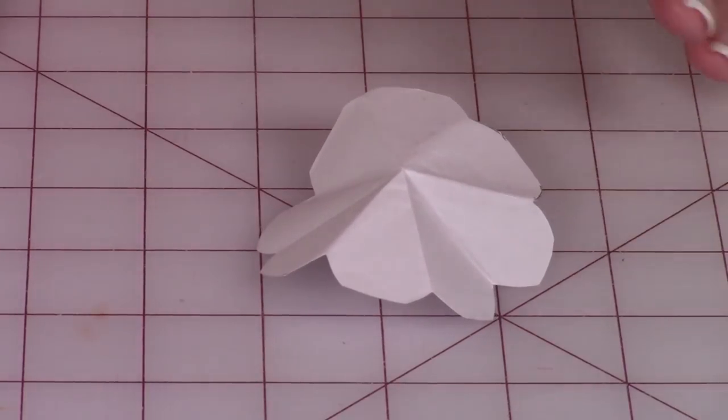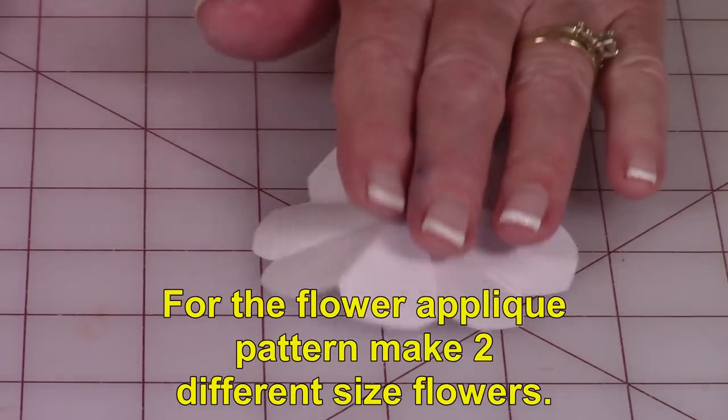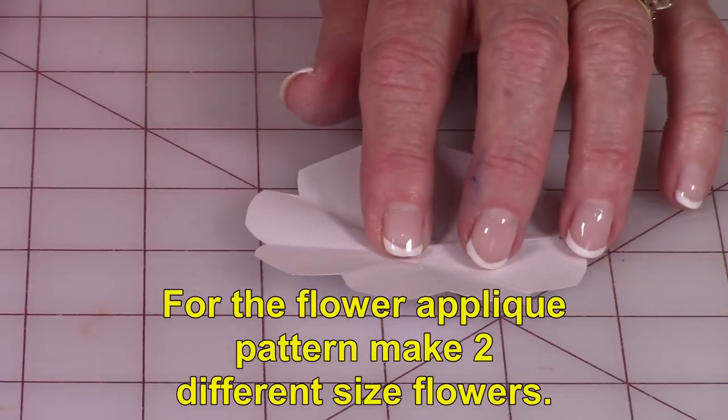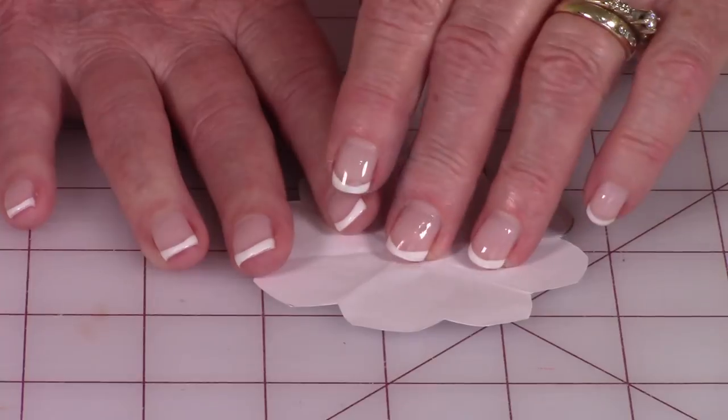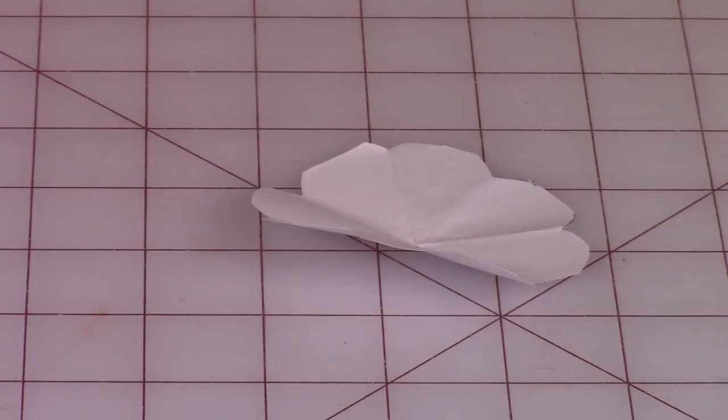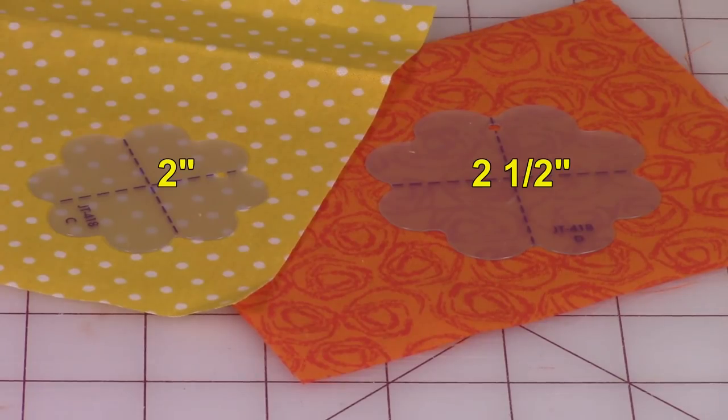Now for the flower that I'm making, I'm making two sizes. I'm making one a little larger and then one a little smaller, and they're going to overlap and sit on top of each other. So here are the two templates that I'm using by June Taylor. One of them is two and a half inches in diameter, and the other one is two inches in diameter.